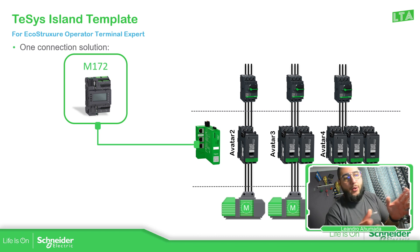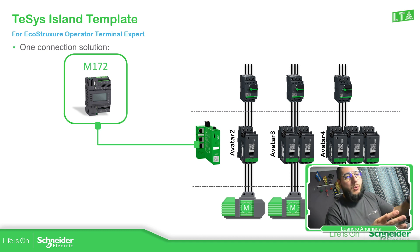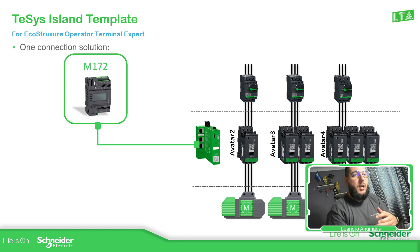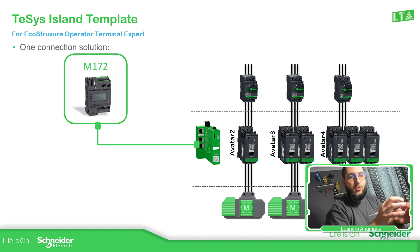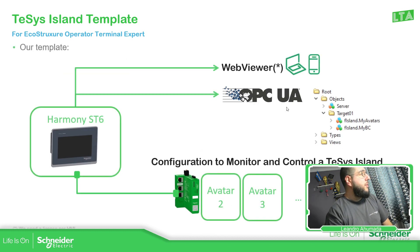In order to control this, we have libraries already developed for EcoStruxure Machine Expert and Control Expert, and also for third-party controllers like Siemens and Rockwell — free for them to use. When using this kind of solution, sometimes you just need to fix the avatar configuration and drag the right function block. But if we want to speed up the process and avoid using a PLC, then we can use this template.